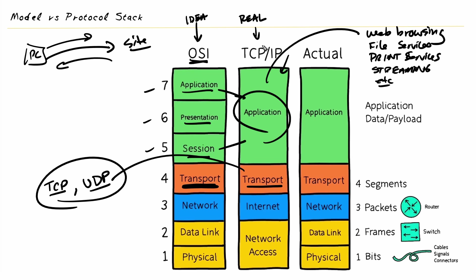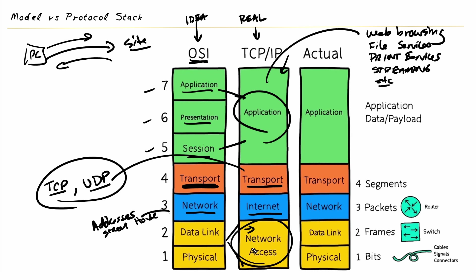Going down the TCP/IP protocol stack, we have the internet layer, which corresponds to layer three, the network layer. That provides the responsibility of adding addresses — for example, the street and house number, which in an IP network is referred to as the IP address. The bottom two layers of the OSI reference model are combined into one called the network access layer, handling the type of envelope, the mailbox slot number, and the actual physical sending of data.